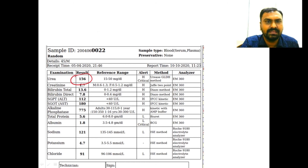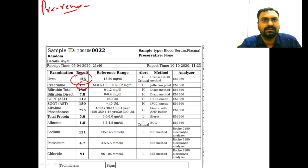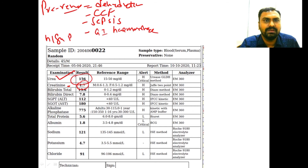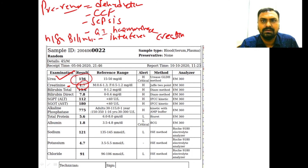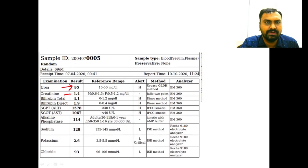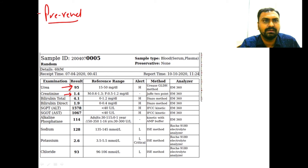Here urea 156 and creatinine 1.7 — this may be due to pre-renal causes like dehydration, diarrhea, vomiting, congestive cardiac failure, sepsis, or GI hemorrhage. These conditions lead to increased urea but creatinine only slightly elevated. It may also be due to high bilirubin, which can interfere with creatinine estimation. Similarly, urea 95 and creatinine 1.4 may be due to renal causes or interference from high bilirubin.